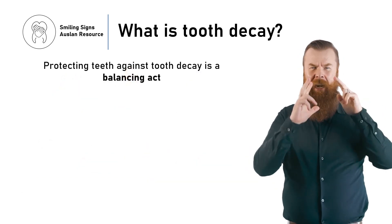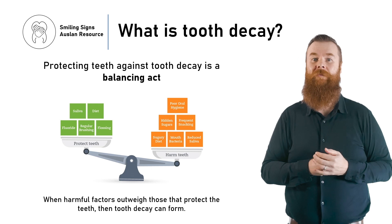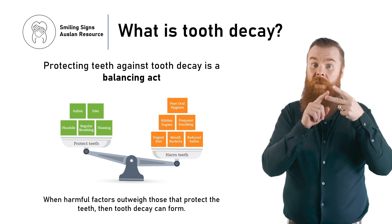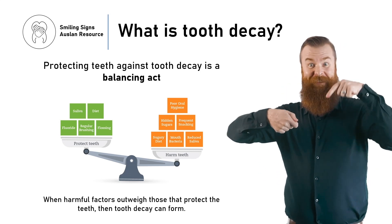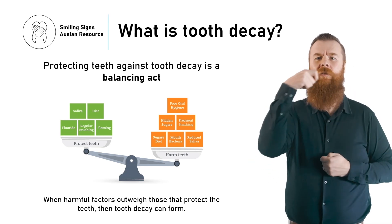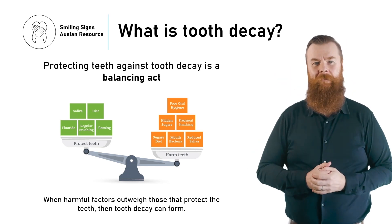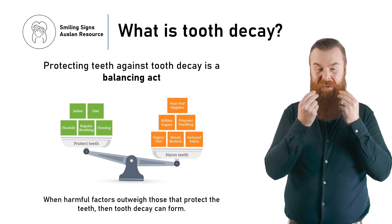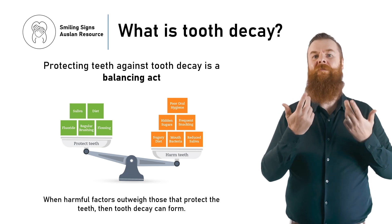Protecting teeth from tooth decay is a balancing act. When the factors that cause tooth decay are greater than the factors that protect the teeth, tooth decay can occur. Things that protect the teeth include saliva, a low sugar diet, fluoride, and brushing and cleaning between the teeth every day. Things that can increase the risk of tooth decay include a dry mouth, sugary drinks, snacking, a high sugar diet and poor oral hygiene.